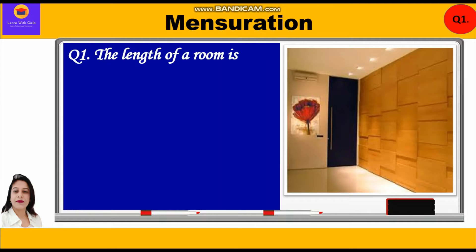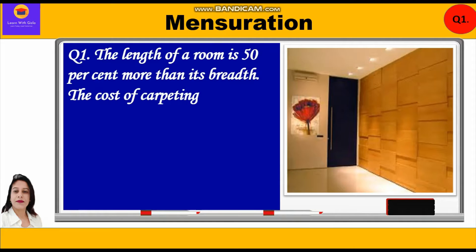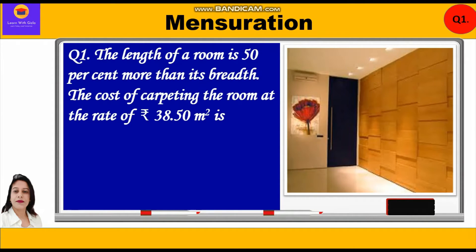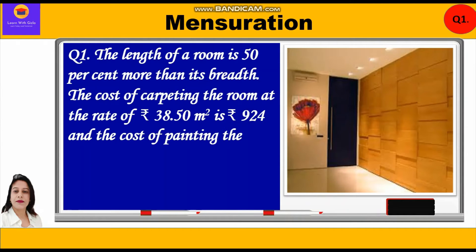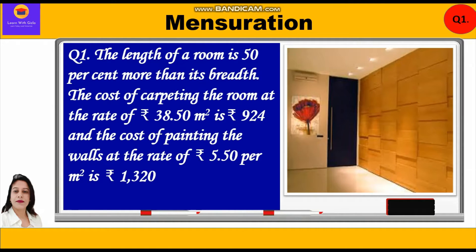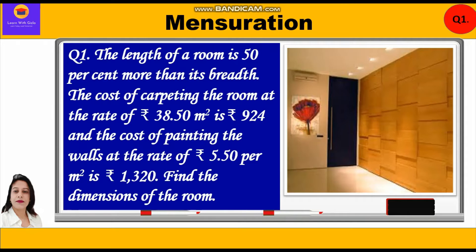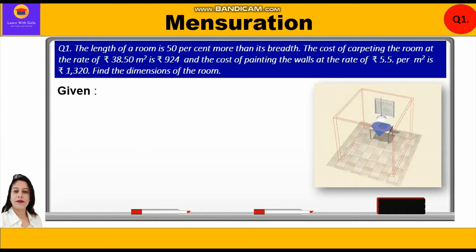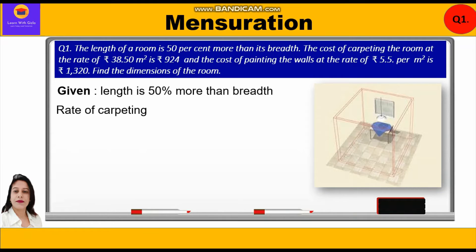Question number one: The length of a room is 50% more than its breadth. The cost of carpeting the room at the rate of rupees 38.50 per meter square is rupees 924, and the cost of painting the walls at the rate of rupees 5.50 per meter square is rupees 1320. Find the dimensions of the room — that is, length, breadth, and height.